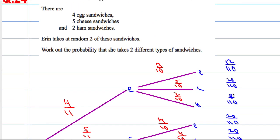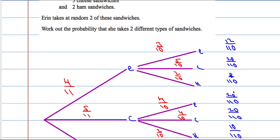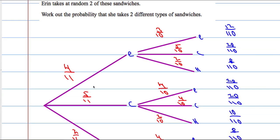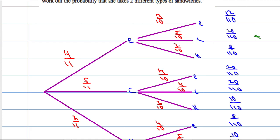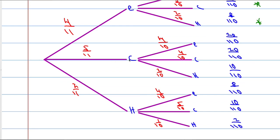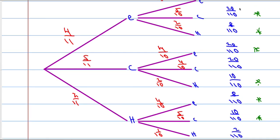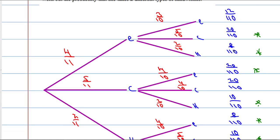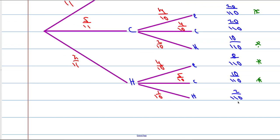We want the probability that she takes two different types of sandwich. So let's identify which outcomes involve two different types: egg then cheese, egg then ham, cheese then egg, cheese then ham, ham then egg, ham then cheese. Adding those probabilities up: 20, 28, 48, 58, 66, 76. So the answer is 76 over 110.